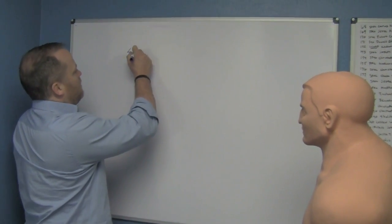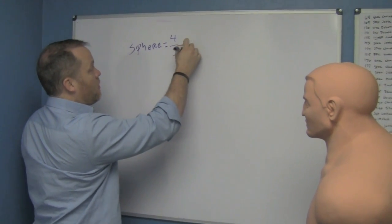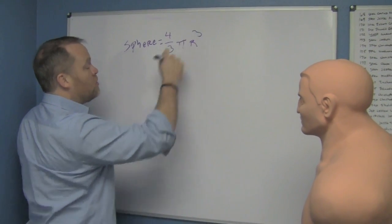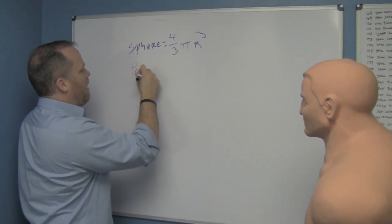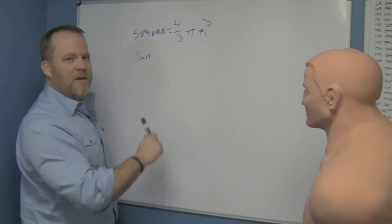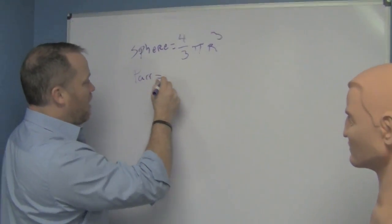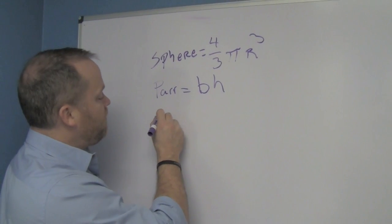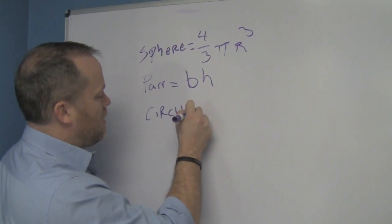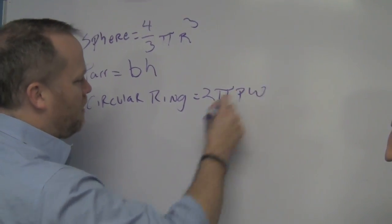Let's take the volume formula for a sphere. The volume formula for a sphere is 4/3 pi r cubed. Let's take another one. The area formula for a parallelogram—I'm just going to abbreviate it because this marker does misspell sometimes—parallelogram, that's base times height. And area formula for a circular ring, that's 2 pi p w.